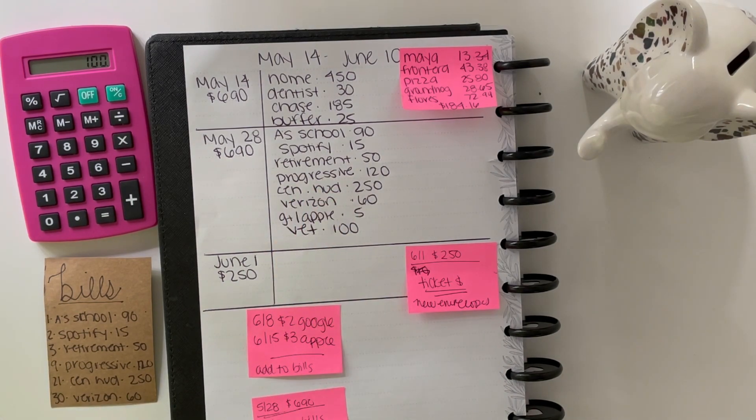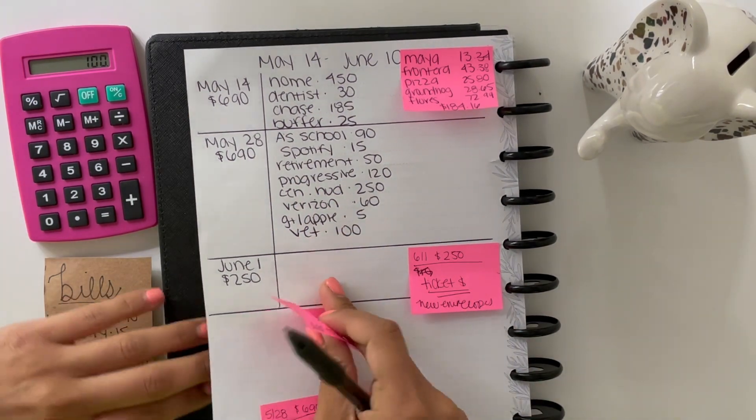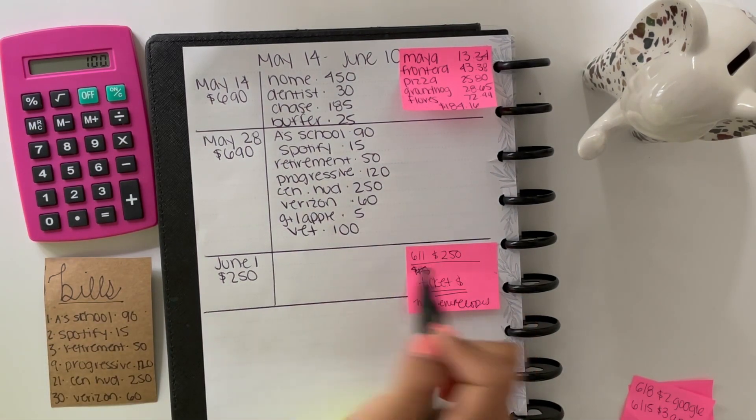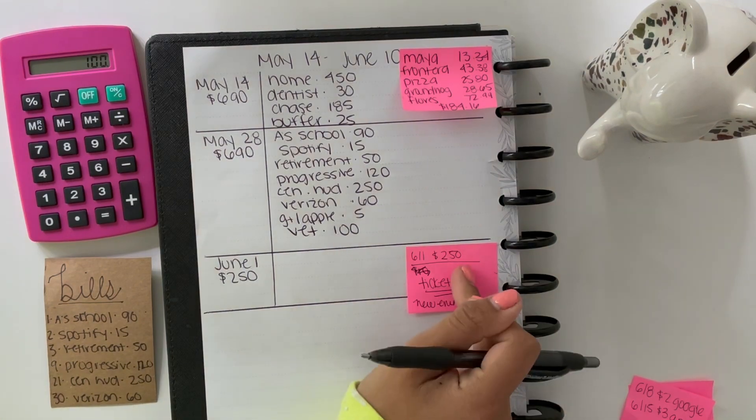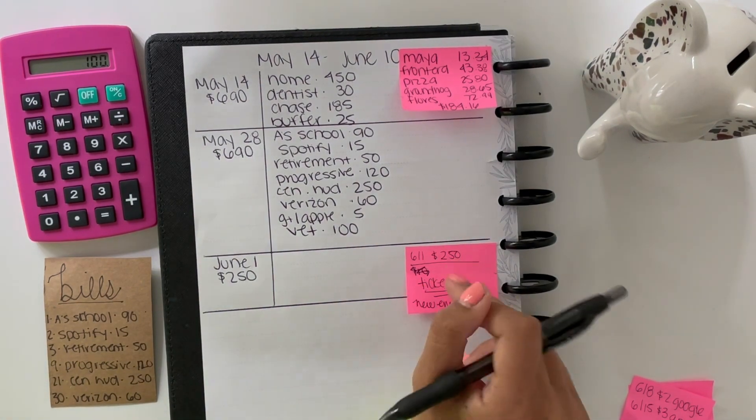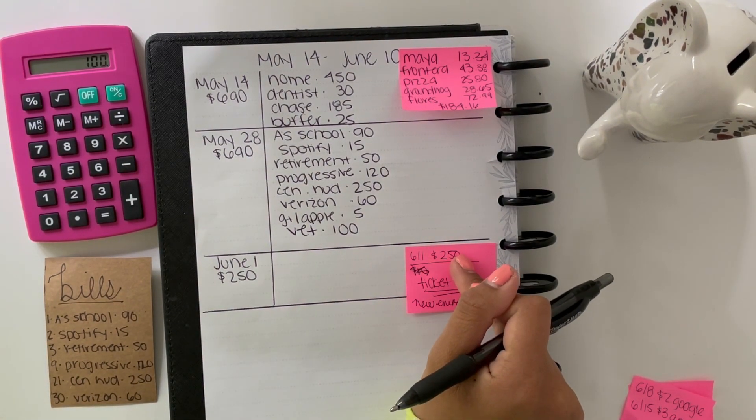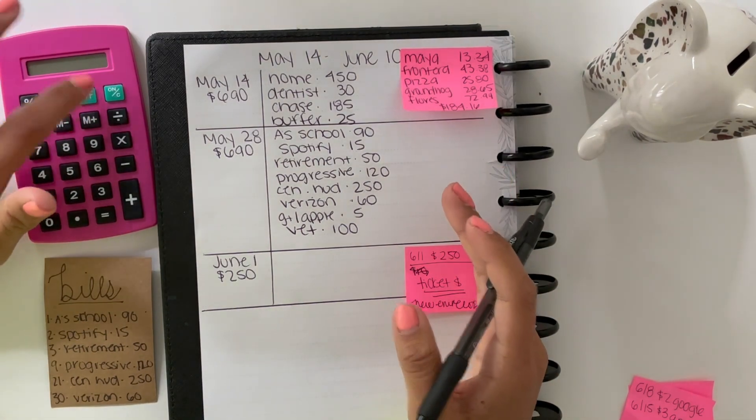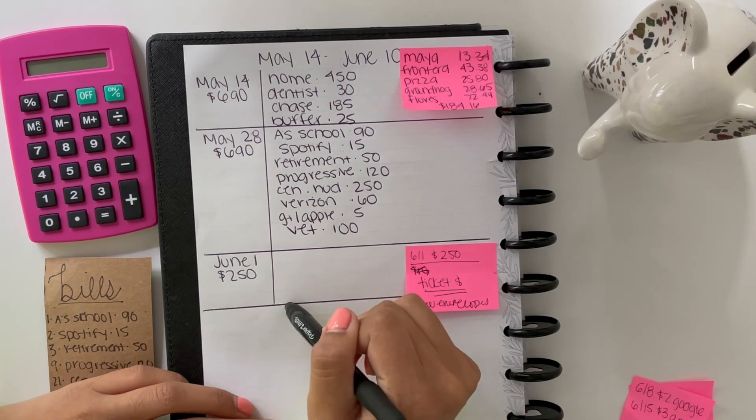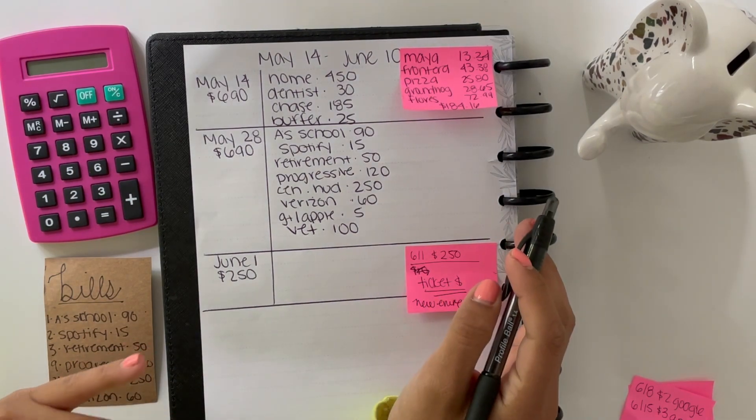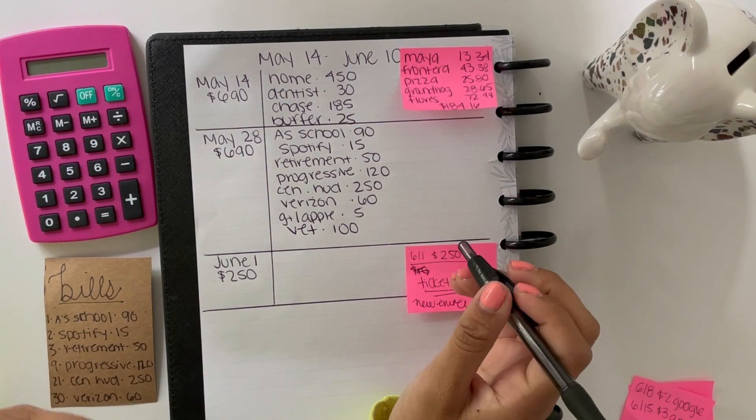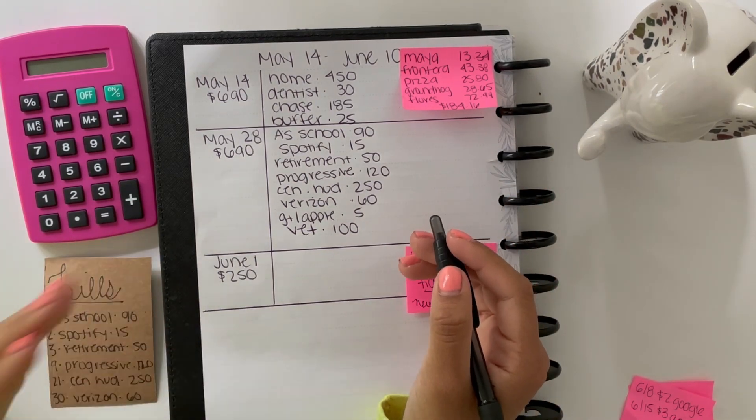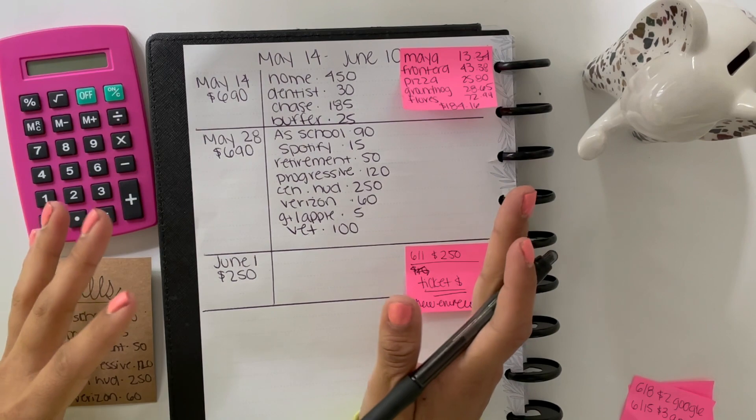For June 1st, I know I have a ticket that I have to go to court for on June 3rd and I don't know how much it's going to be, but I'm going to say it's going to be about $250. Hopefully not more than that and I'm just going to leave this blank for that because I don't know how much it's going to be. I haven't had a ticket in a very long time but I used to get them all the time.